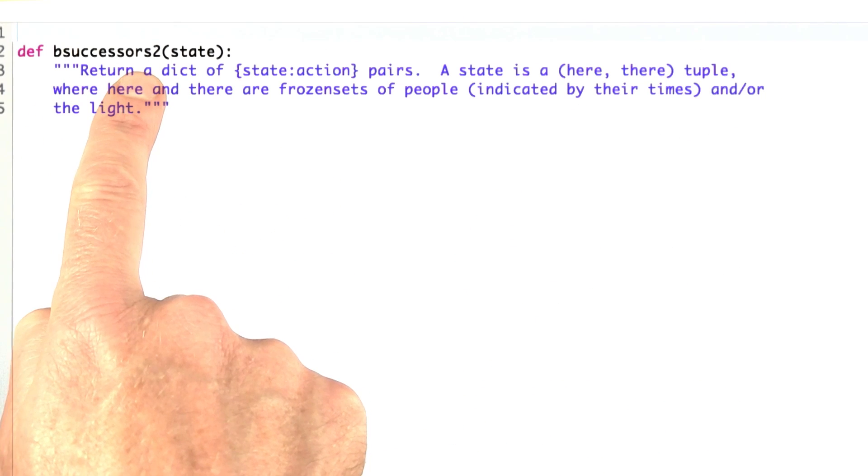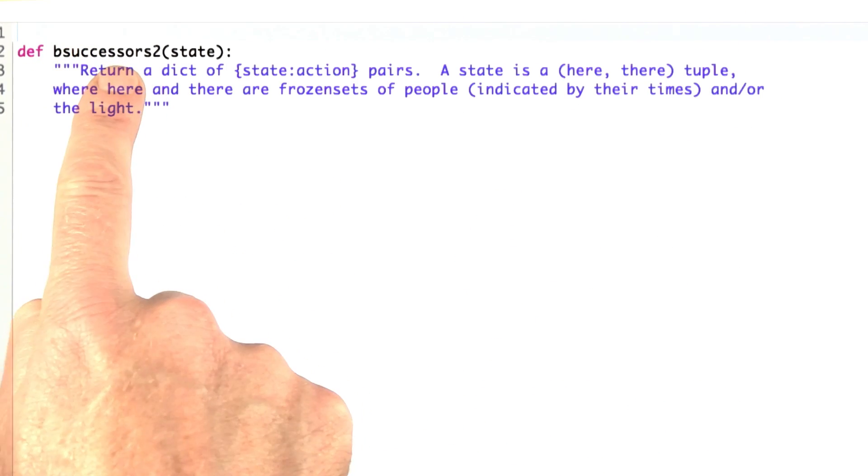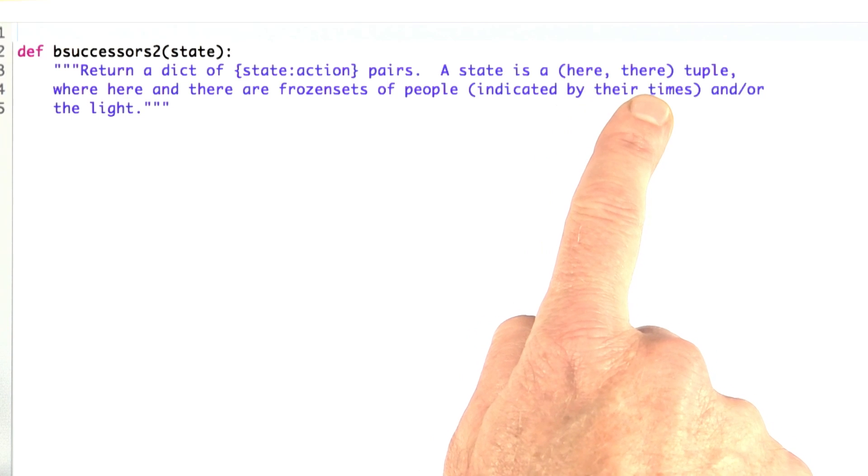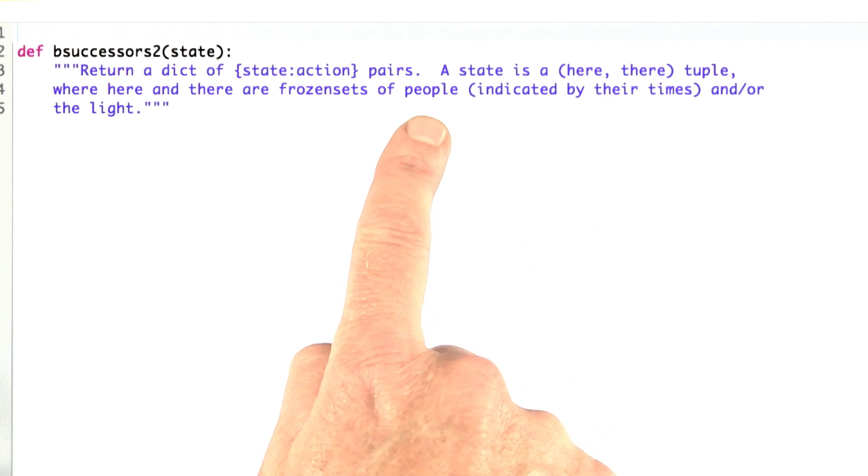Now I want you to write the new successor function for the bridge problem. We'll call it bsuccessors2, the 2 just to keep it distinct from the first version. Again, it returns a dict of state action pairs. A state now is just a 2 tuple of a here and a there, and the here and there are still frozen sets. So it's pretty much the same except we dropped out the time t. Go ahead and implement that for me.